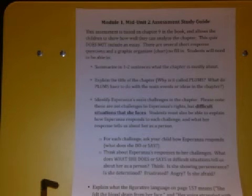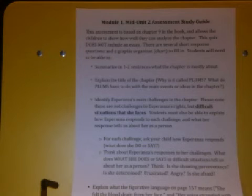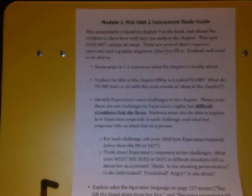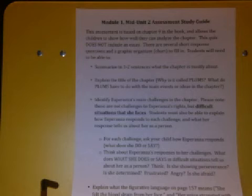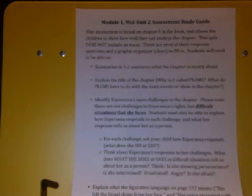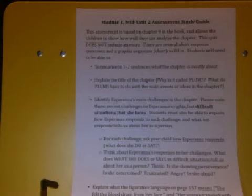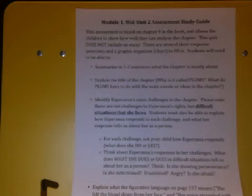Going back to your study guide, the next sentence says, students must also be able to explain how Esperanza responds to each challenge and what her response tells us about her as a person. We've been doing this and practicing with Esperanza, with Miguel, with Mama, and with Abuelita. We've gone through the chapters and talked about and written down some things on our charts about how they respond to challenges and what that tells us about them each as a person.